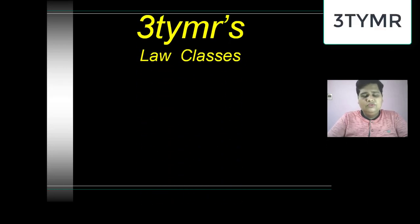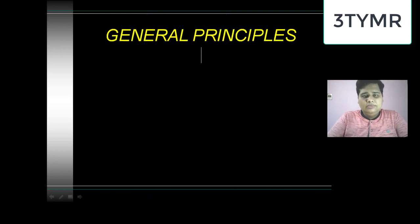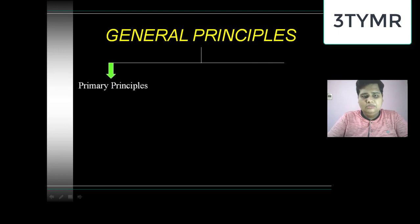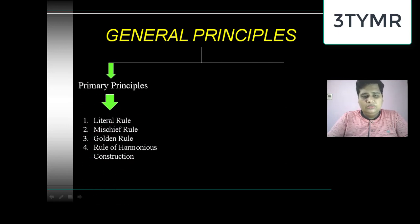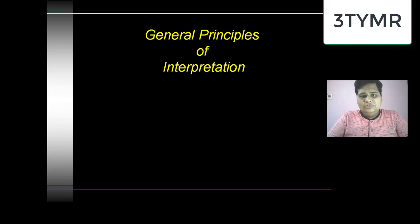Hello friends, welcome to 3 Timers Law Classes. We were doing a series on interpretation of statutes, specifically on the general principles of interpretation. In our earlier lectures we have seen that the general principles were of two types: first, primary principles which include four types of rules — the literal rule, mischief rule, golden rule, and rule of harmonious construction. In secondary principles we have seen three types: first is noscitur a sociis, second ejusdem generis, and third is reddendo singula singulis. We have done all these topics in our previous lectures, so please see them first before watching this lecture.